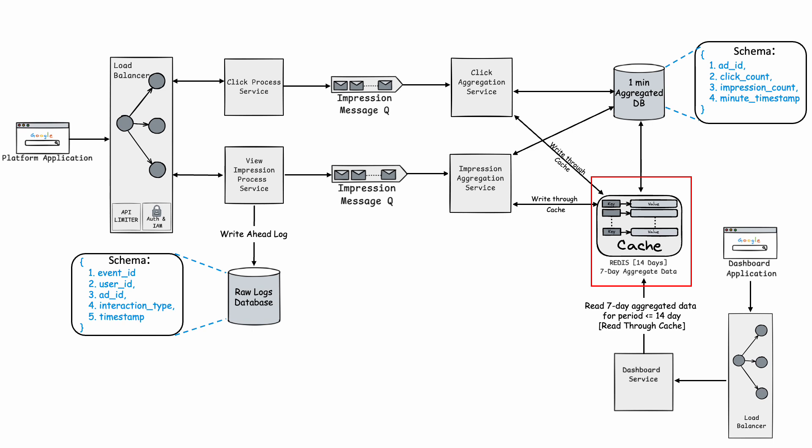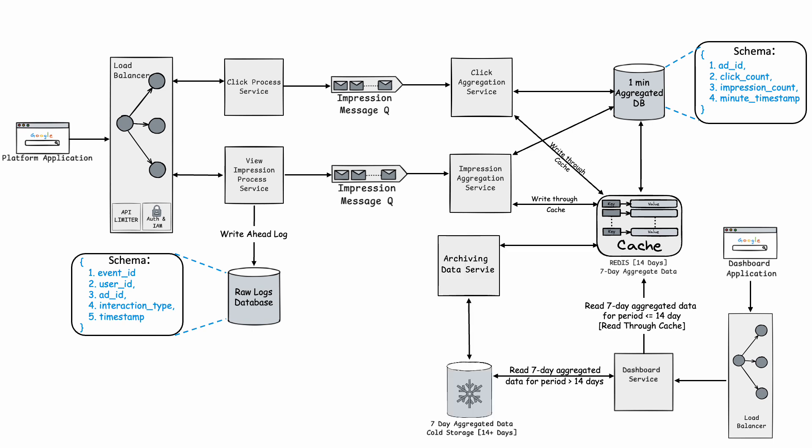Since this is a cache, we set a time-to-live of 14 days, so the cache stores 7-day aggregation data for the last 14 days. The cache stores ad ID, timestamp, and impression and click counts — this amounts to a few GBs if we have 1-5 million advertisements daily. When data is 13 days old, an archiving service transfers it to cold storage. Most recent data up to 14 days is served from the cache; for any data older than 14 days, the dashboard service goes to cold storage to retrieve it.